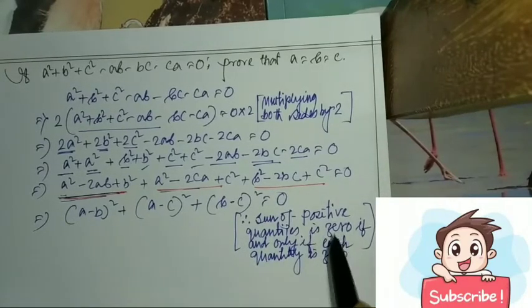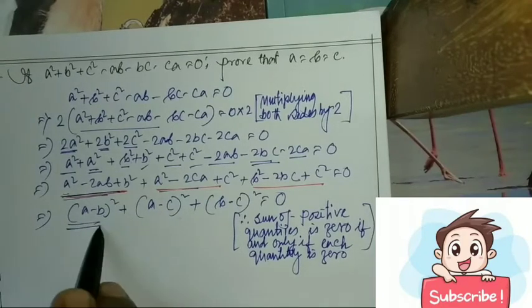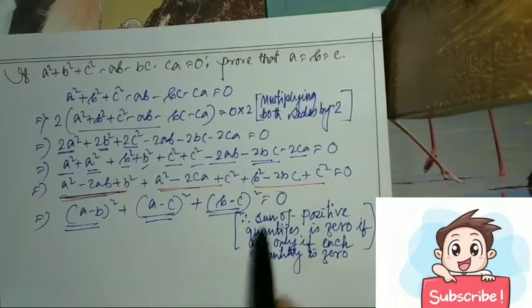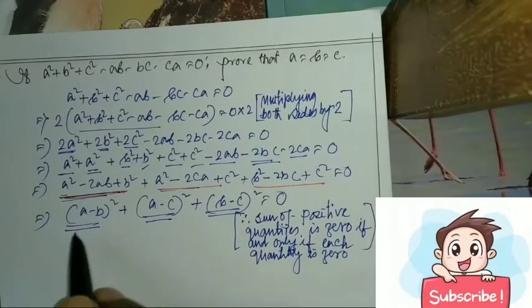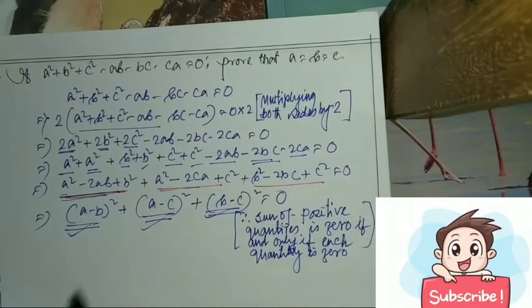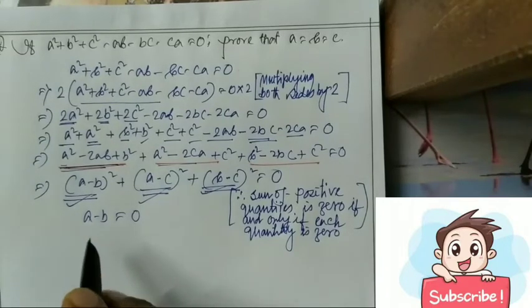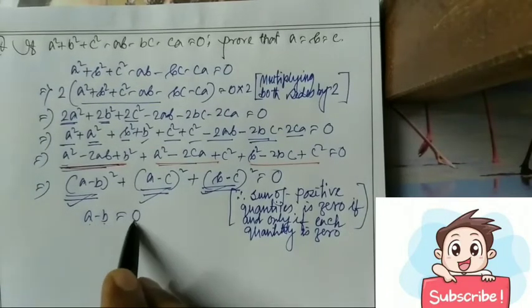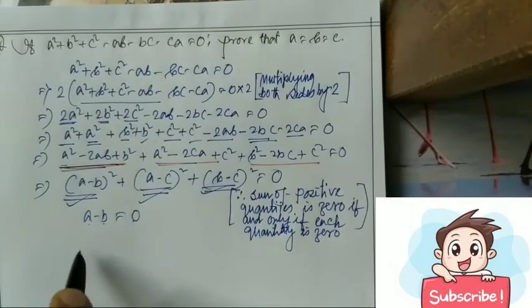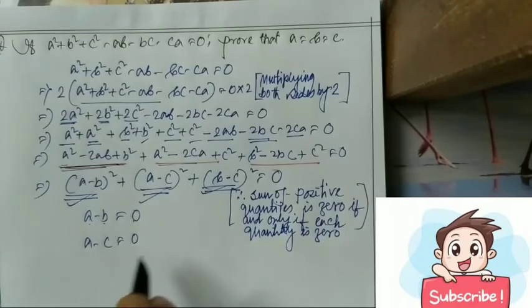The sum of positive quantities is zero if and only if each quantity is zero. So this sum being zero means each term must be zero: (a - b)² = 0, (a - c)² = 0, and (b - c)² = 0. Therefore, a - b = 0, a - c = 0, and b - c = 0.